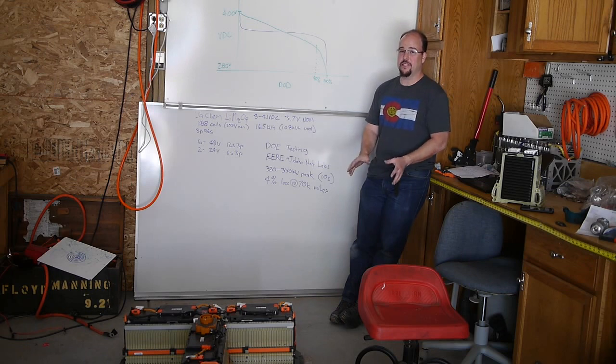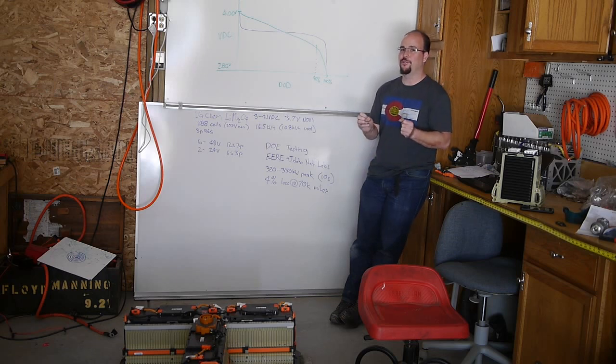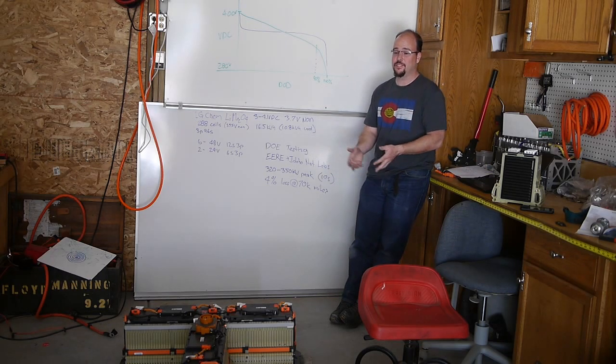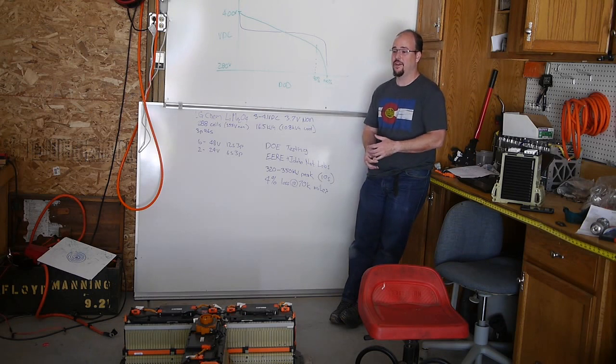And this is the reason why EERE is doing this testing, or Idaho National Laboratories, is they want to see how the packs are degrading over time. Right now in the testing they've done, the fleet shows 70,000 miles. Now, it's a hard thing on the Volt because you don't know if those are all electric miles or they could be all gas miles, and you could have essentially zero cycles on the battery.